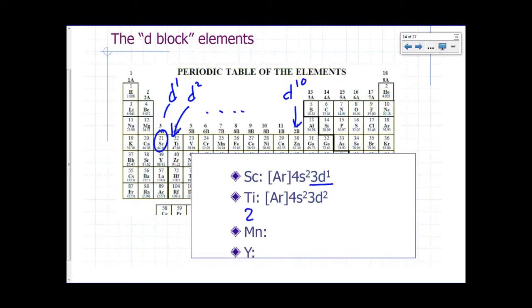So if I have to do it for zinc, what would it be? Zinc would have the noble gas just before it, argon, and then 4S2, and then 3D10.